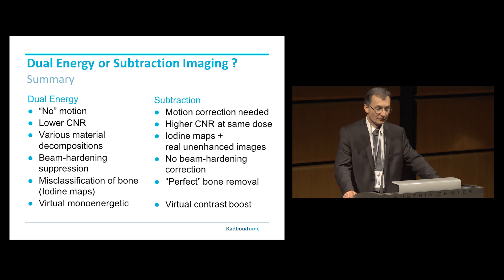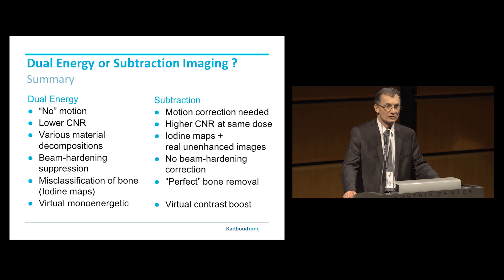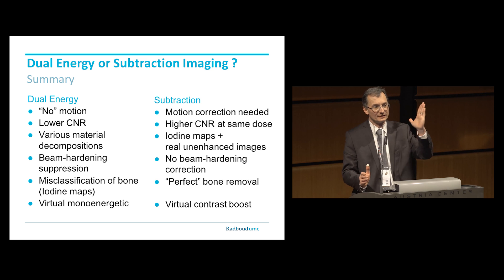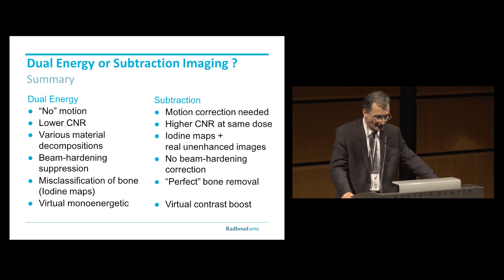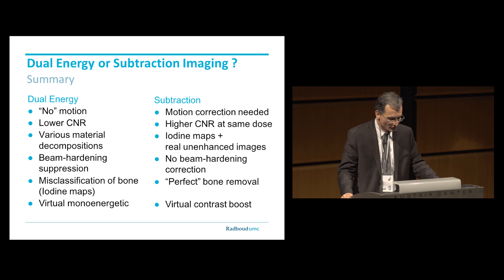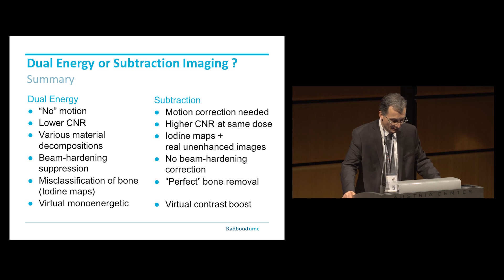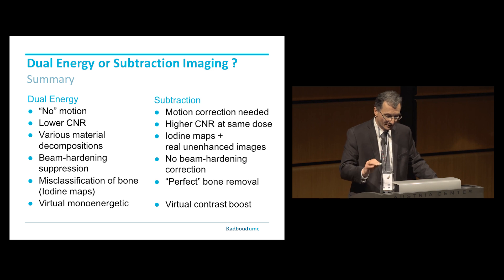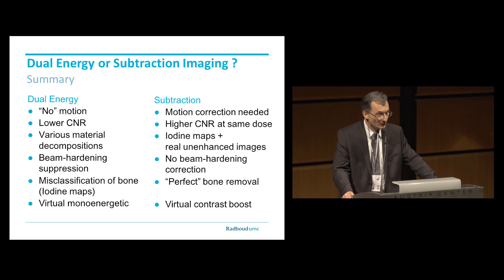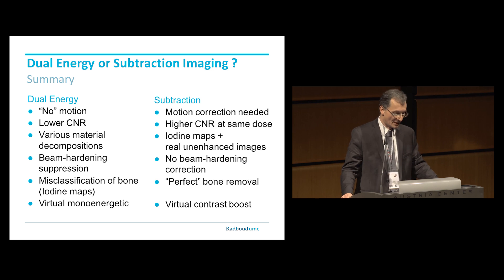Comparing the advantages and disadvantages of the two techniques: dual energy has basically almost no motion, though dual source scanners do have some motion due to a quarter-rotation offset causing pulsatility effects. Subtraction imaging requires motion correction. CNR is substantially higher for subtraction. Dual energy gives you not only iodine maps but various material decomposition, which is not the case in subtraction imaging — it only gives you iodine maps and real unenhanced images. Dual energy has beam hardening suppression, which is not the case in subtraction. In dual energy there's usually misclassification of bone on iodine maps, whereas on subtraction images bone is completely removed.